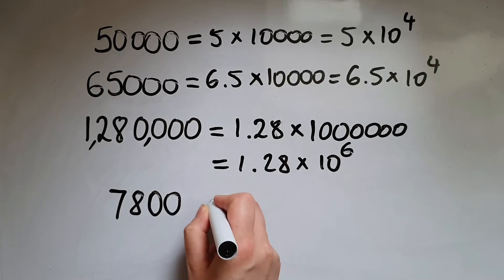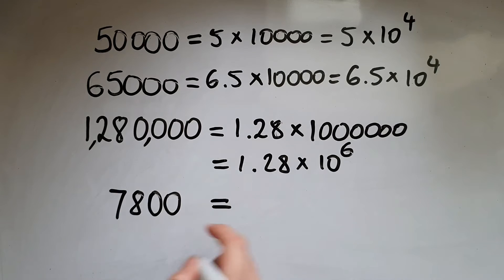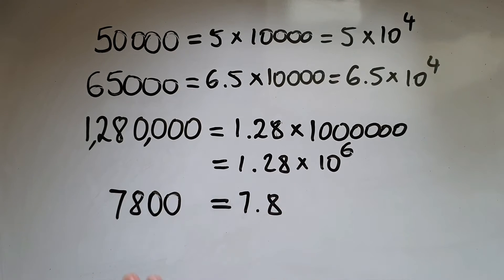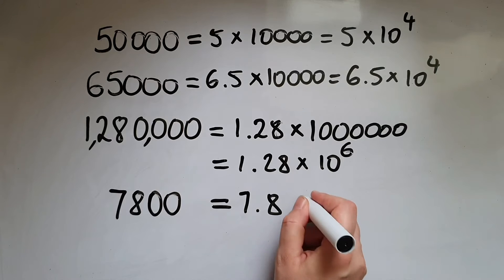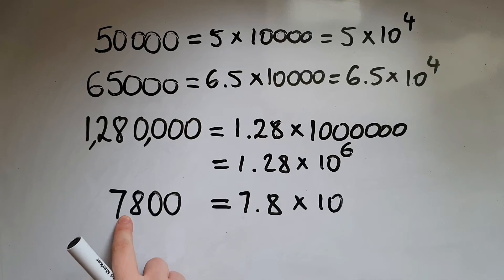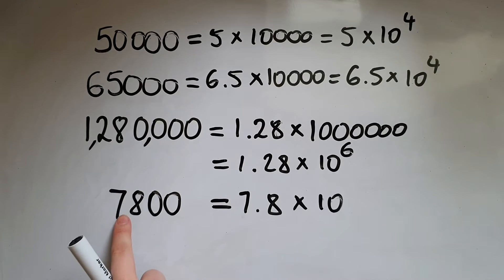Let's try 7,800. We'll write this as 7.8, because that is larger than 1 and smaller than 10, times 10 to the power of 3, because that's where the decimal point is going.